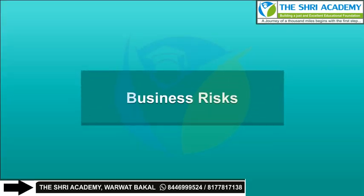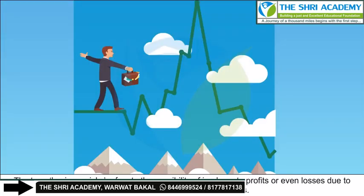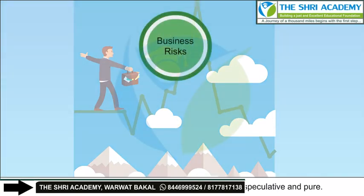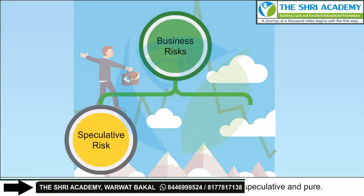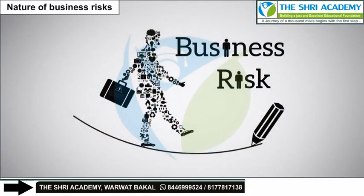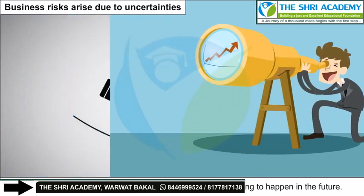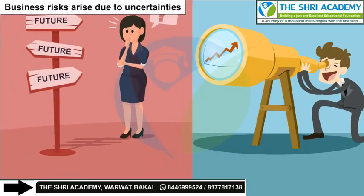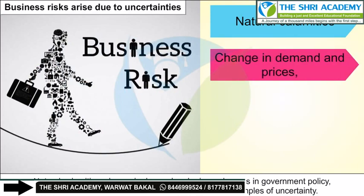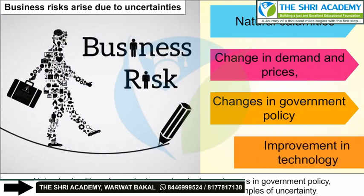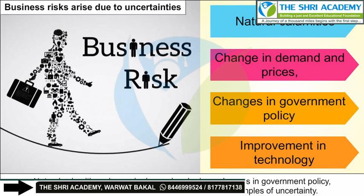Business risks: The term business risks refers to the possibility of inadequate profits or even losses due to uncertainties or unexpected events. Business enterprises constantly face two types of risks — speculative and pure. Business risks arise due to uncertainties; uncertainty refers to the lack of knowledge about what is going to happen in the future. Natural calamities, change in demand and prices, change in government policy, and improvement in technology are some examples of uncertainty.